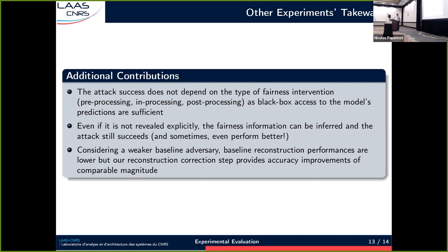We also have additional contributions in the paper. We performed experiments with different types of fair learning procedures — pre-processing, in-processing, and post-processing fairness-enhancing methods — and showed that the attack still performs identically. We also showed that even if the fairness information is not revealed explicitly, so the attacker doesn't know which fairness metric was used nor the value of the unfairness tolerance, very simple strategies can be used to infer it and the attacks still succeed. Finally, we also considered a weaker baseline adversary and showed that the reconstruction correction step still brings improvements.